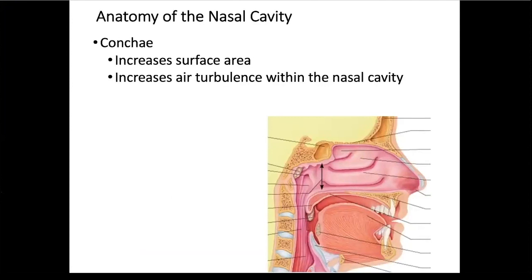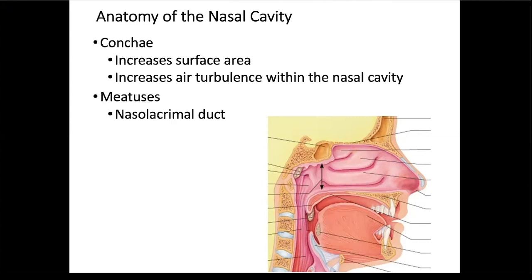The conchae are those ridges, and their purpose is twofold: to increase surface area so that more mucosa comes in contact with the air to moisten, warm, and clean it, and also to slow the movement of air through the nasal cavity by creating air turbulence. Since the ridges are present instead of a flat surface, the air cannot come straight in — there is turbulence that slows it down, giving it more time to contact the mucus. The meatuses are the depressed areas underneath each concha: superior concha/superior meatus, middle concha/middle meatus, and inferior concha/inferior meatus.